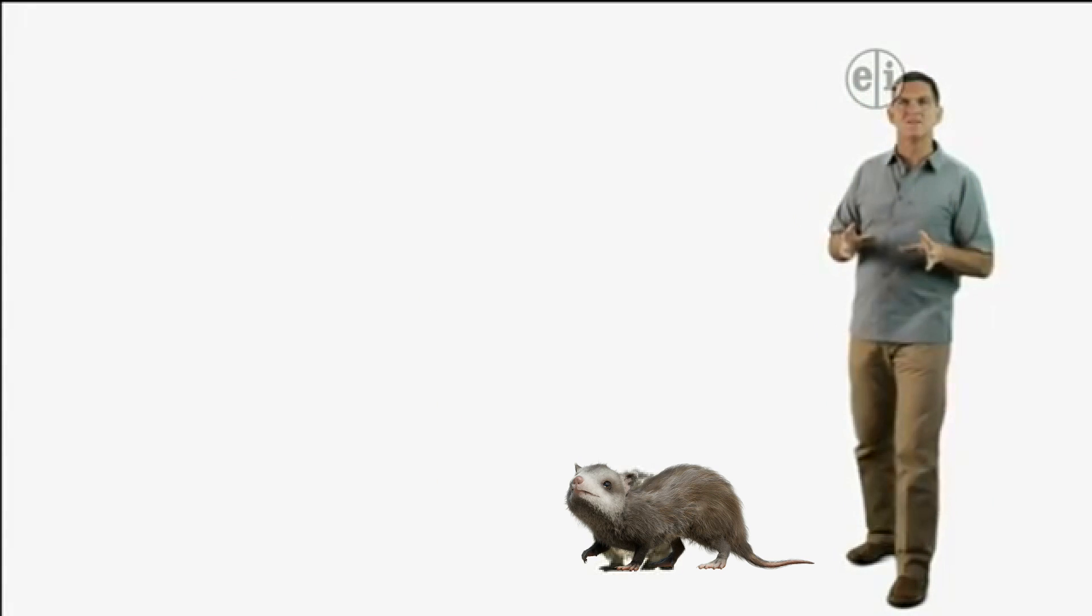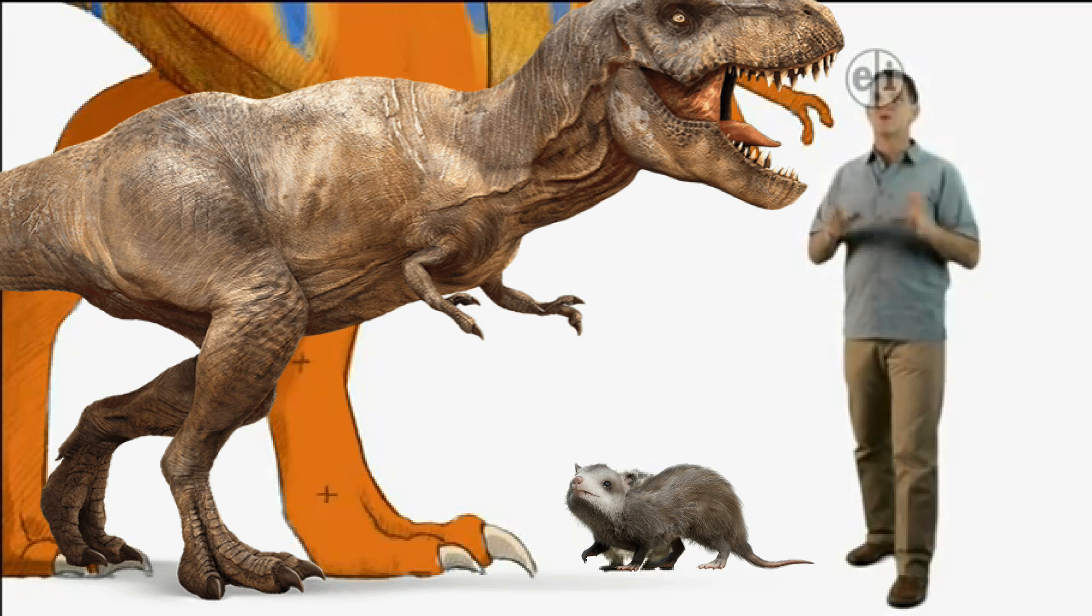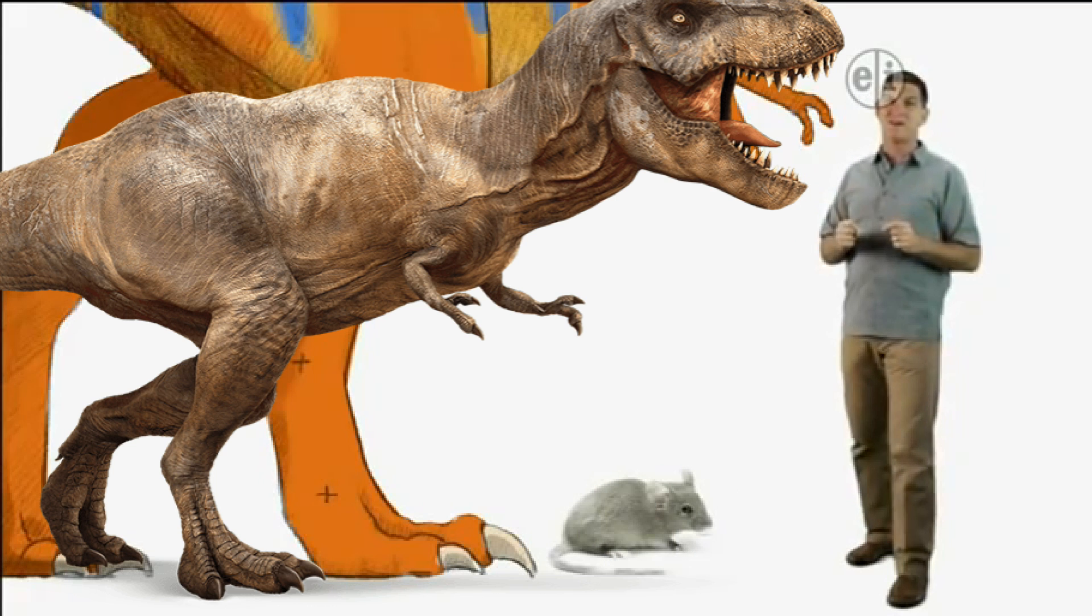Almost all of the mammals that lived in the Mesozoic were very small compared to the huge dinosaurs, but those early mammals shared a lot of features with the mammals alive today. They had fur, and the mother mammals made milk to feed their babies.